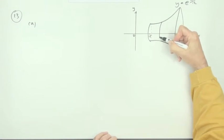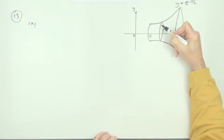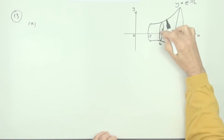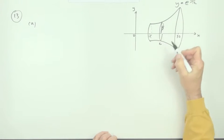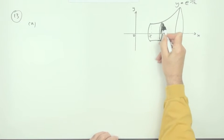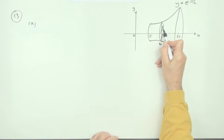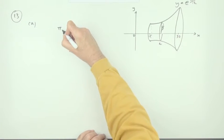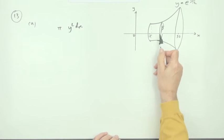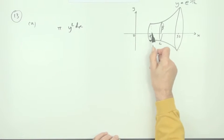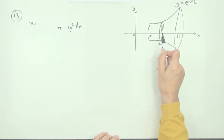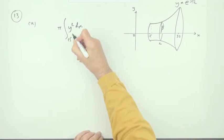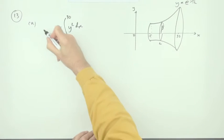For three marks, find its volume. If you take a thin disk of width dx, its radius will be y, so the area of that circle is pi y squared and the volume of that will be pi y squared dx. To get the volume of the whole thing, you add up all of those little disks from x is 15 to x is 30.